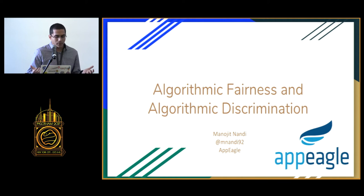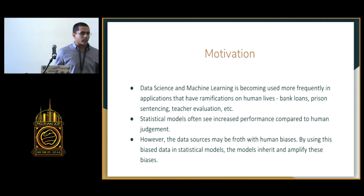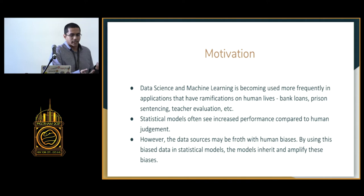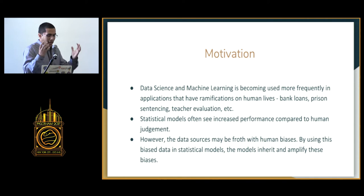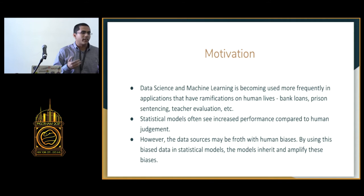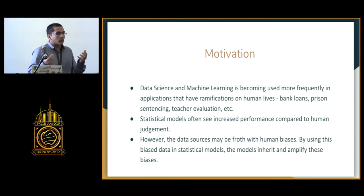How do you make algorithms that do not adversely impact any particular group of people? I'll talk about this in a way that ties into how we already do machine learning and data science — it's not something extra, it's something we need to look at from a different perspective. We're using data science and machine learning a lot more for applications like who gets bank loans, how we decide prison sentencing, and teacher evaluations. We like statistical models because they tend to be more consistent and accurate compared to human judgment. But when we train these models on historical data based on human judgment, the models inherit that human bias.